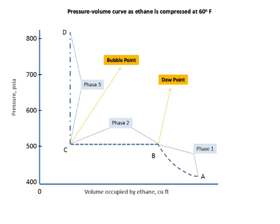As we continue to push the plunger in, reducing the area inside the syringe, more liquid forms and less gas — this is phase two. The pressure does not increase; it remains constant until we hit the bubble point. Shortly after the bubble point we begin phase three. Since liquid will not compress easily, as we continue to push the plunger in, the pressure increases rapidly and only liquid exists beyond the bubble point.